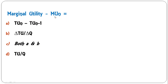Next: 'Marginal utility MU(n) equals' — total utility of nth unit minus total utility of (n−1)th unit; ΔTU/ΔQ; both A and B; or total utility divided by total quantity consumed? You can measure marginal utility by either formula A or B, so C — both A and B — is the correct answer.